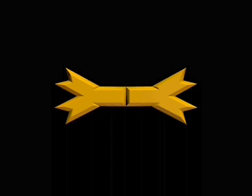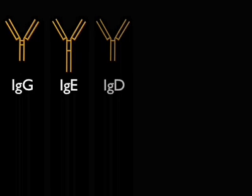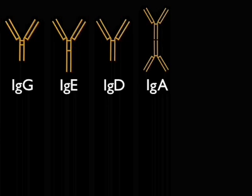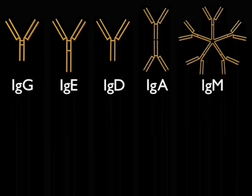Antibodies, or immunoglobulins, can be subdivided into different classes according to their structure. There are five classes, called IgG, IgE, IgD, IgA, and IgM, each having different functions.